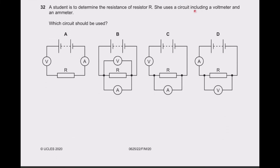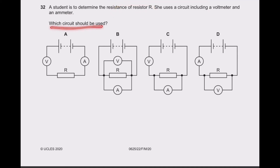Question 32: which circuit correctly includes a voltmeter and ammeter to measure a resistor R? Voltmeter is connected in parallel and ammeter in series. Option D is correct; the rest are incorrect.